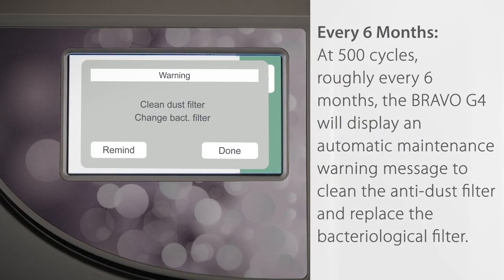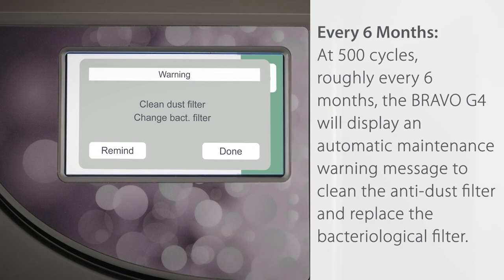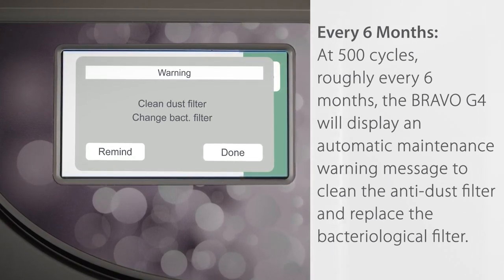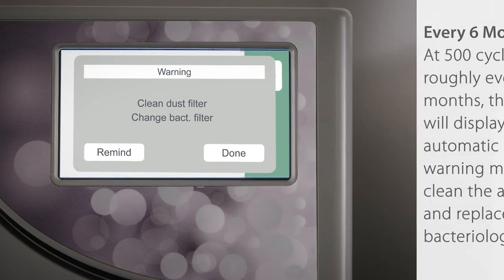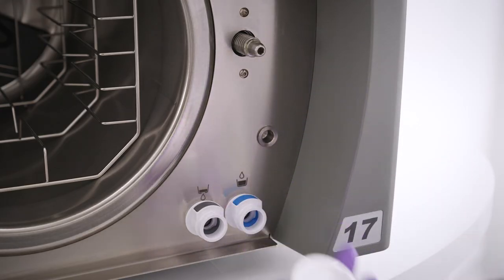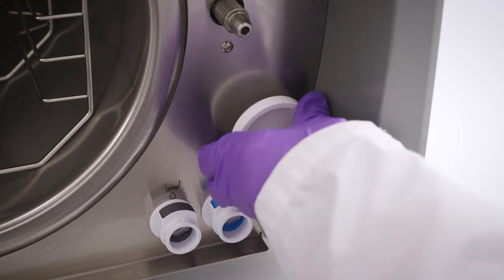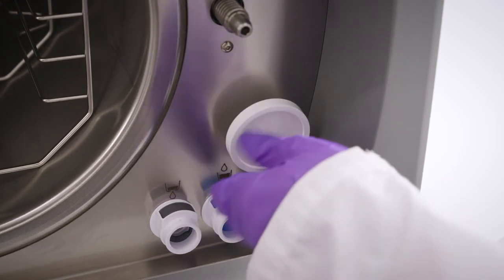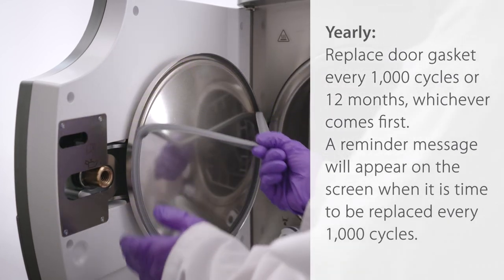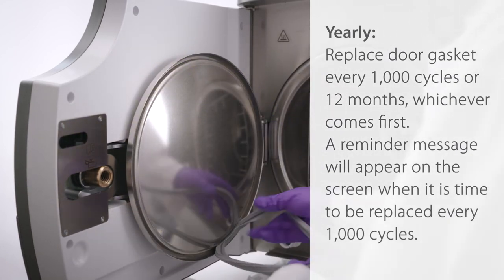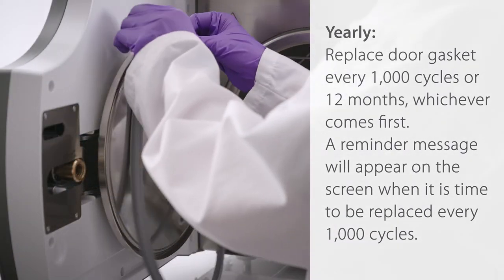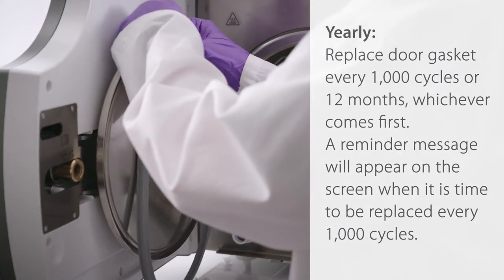Every six months, at 500 cycles, roughly every six months the Bravo G4 will display an automatic maintenance warning message to clean the anti-dust filter and replace the bacteriological filter. Yearly, replace the door gasket every 1000 cycles or 12 months, whichever comes first. A reminder message will appear on the screen when it is time to be replaced.